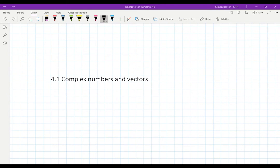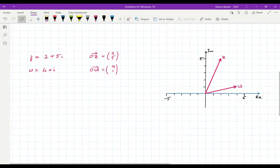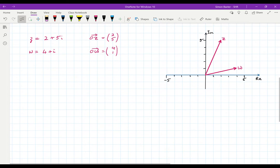In this video I want to look at the connection between complex numbers and vectors. Let's start by looking at two complex numbers. Let's take the complex number Z which is 2 plus 5i.